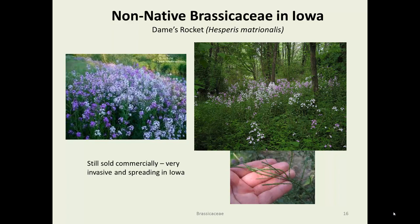Another non-native Brassicaceae species in Iowa is Dame's Rocket. This plant is attractive and has been sold commercially — people buy wildflower-in-a-can mixes and sometimes buy this separately, not realizing they're kind of letting the worms out of a can. It can be very aggressive. I've seen it spreading in ditches in the last five years quite aggressively in Polk County. There's a picture of a woodland where it's been spreading, and also a wetter area — it doesn't mind a little moisture, so you see it in ditches more than many plants. In the bottom right you can see the siliques developing with some lumps in them, so they are like a loment.